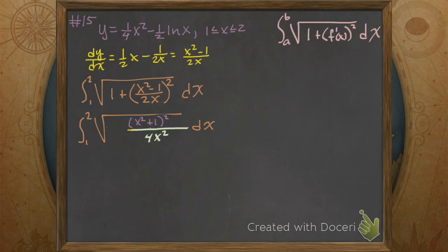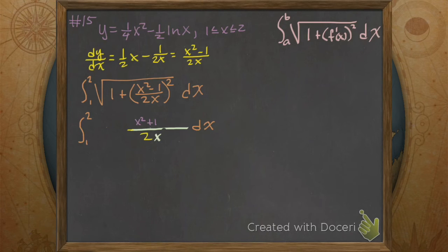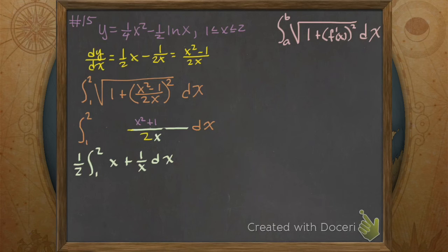That factors into x squared plus 1, squared. Then what does that root do? It reduces the roots! And the 2's gone, and the square root of 4 is 2. So in this next step I'm going to pull that one half out front and split those fractions: x squared over x gives x, and the 1 over x is 1 over x.